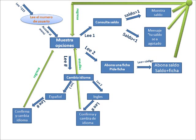Las flechas verdes indican que cuando termina un proceso y este es correcto, te devuelve a mostrar opciones. Esta es una cualidad del programa: siempre que la ejecución es correcta, te regresa al menú de opciones y te vuelve a mostrar todas las opciones.